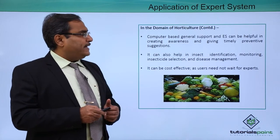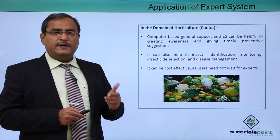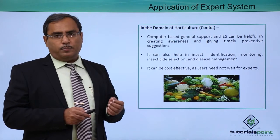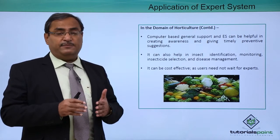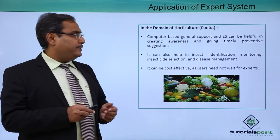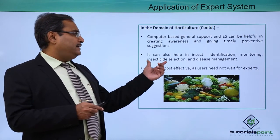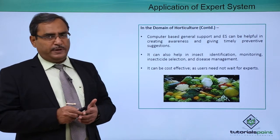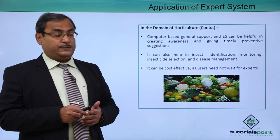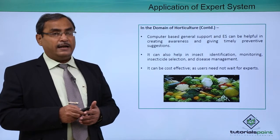Computer-based general support and expert systems can be helpful in creating awareness and giving timely preventive suggestions. If we can predict that diseases or pest-related problems are coming and we have the required training, preventive measures can be taken beforehand. Expert systems can also help in insect identification, monitoring, insecticide selection, and disease management. It can be cost effective as users need not wait for experts, since the expert system provides all such guidance and information.